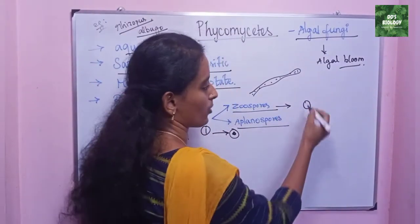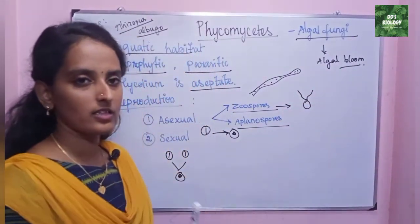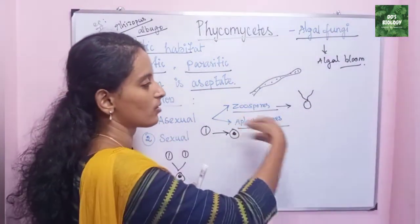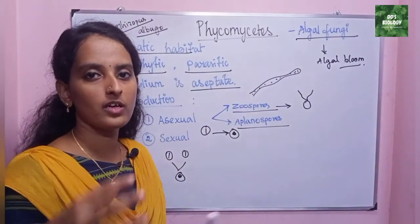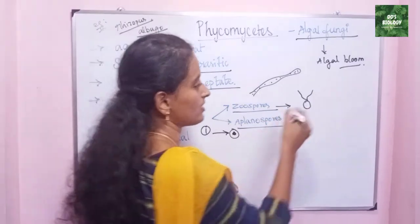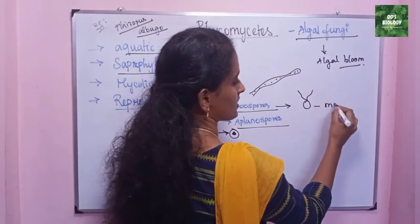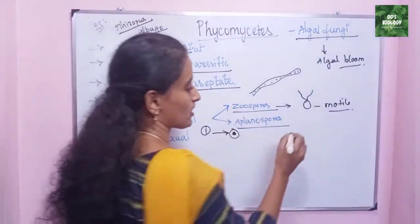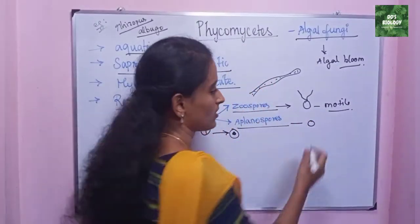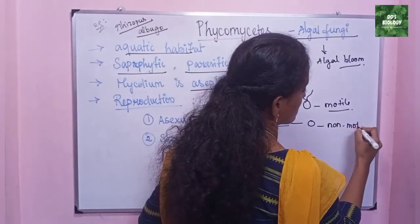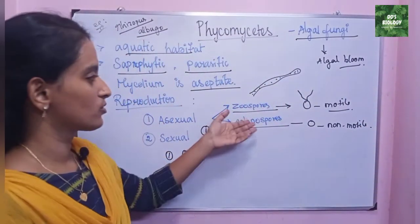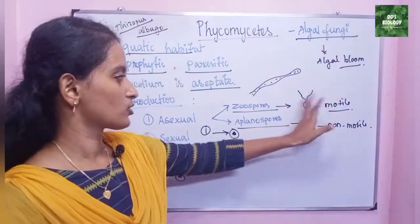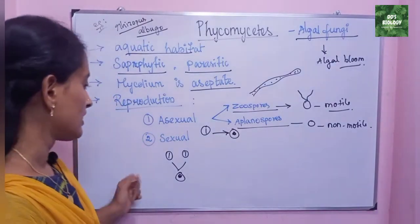Zoospores are aquatic habitat spores that can swim and move using flagella — they are motile. Aplanospores are normal spores without any flagella, so they are called non-motile spores. So zoospores are flagellated and motile, while aplanospores do not have flagella and are non-motile.